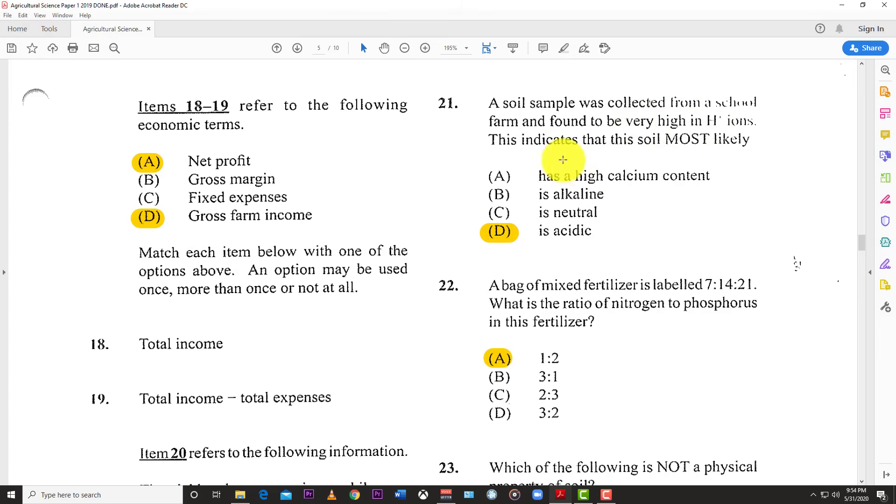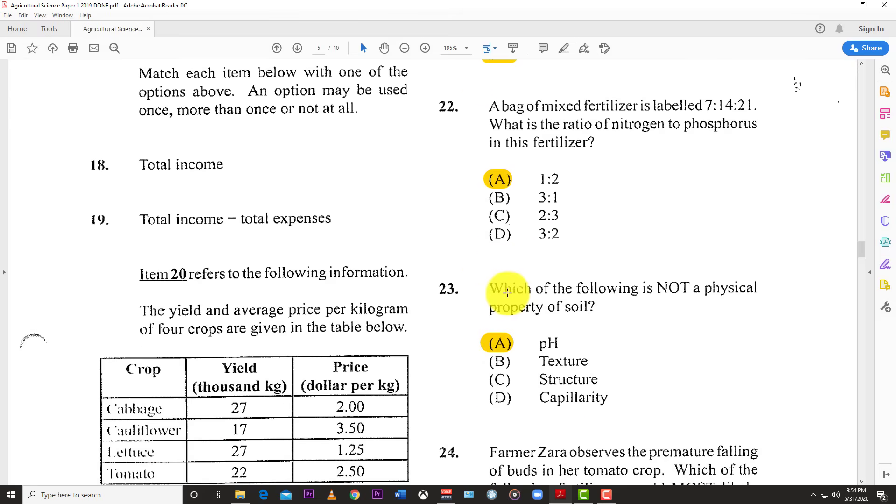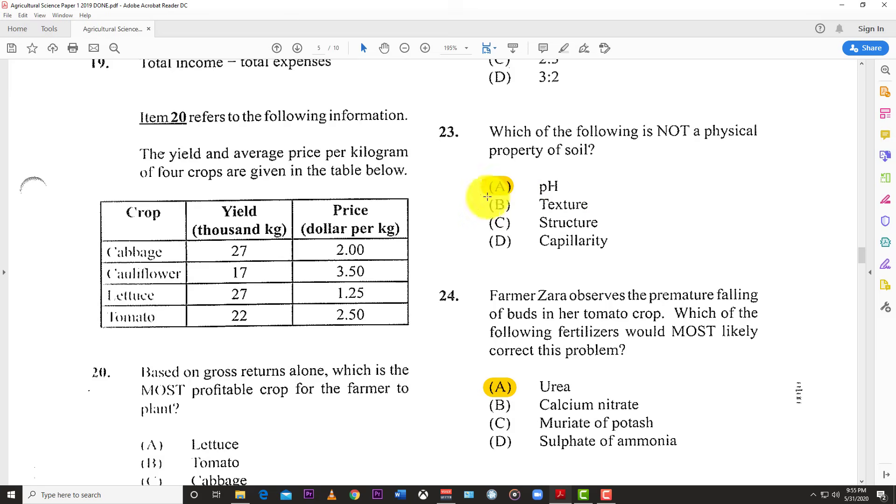Number 21: A soil sample collected from a school farm was found to be very high in H+ ions. This indicates the soil is acidic. Number 22: A bag of mixed fertilizer is labeled 7-14-21. What is the ratio of nitrogen to phosphorus? Nitrogen is 7, phosphorus is 14 (N-P-K order), so the ratio is 1 to 2, same as 7 to 14. Number 23: Which of the following is not a physical property of soil? pH is a chemical property of soil.